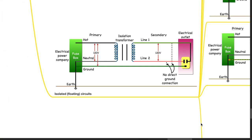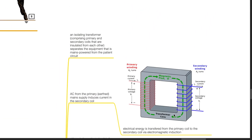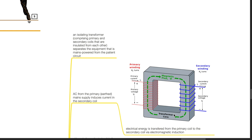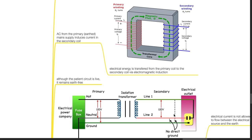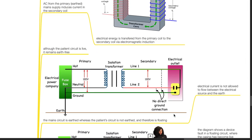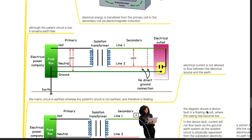Use of isolated or floating circuits. An isolating transformer comprising primary and secondary coils that are insulated from each other separates the equipment that is mains powered from the patient circuit. AC from the primary earth mains supply induces current in the secondary coil. Electrical energy is transferred via electromagnetic induction. Although the patient circuit is live, it remains earth-free. The main circuit is earthed, whereas the patient's circuit is not earthed and therefore is floating. Electrical current is not allowed to flow between the electrical source and the earth.